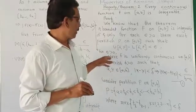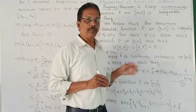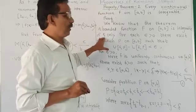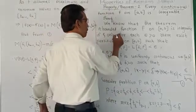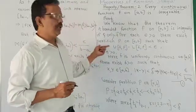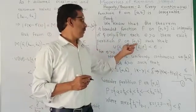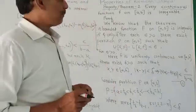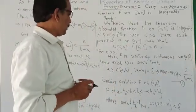that U(F,P) minus L(F,P) less than epsilon. Hence, a bounded function on [a,b] is integrable if and only if for each epsilon greater than 0, there exists P on [a,b] such that U(F,P) minus L(F,P) less than epsilon.